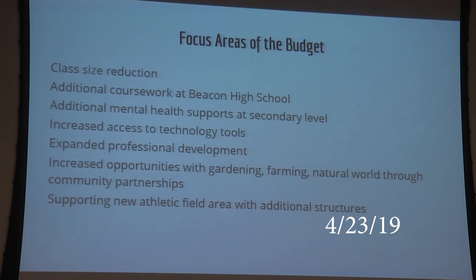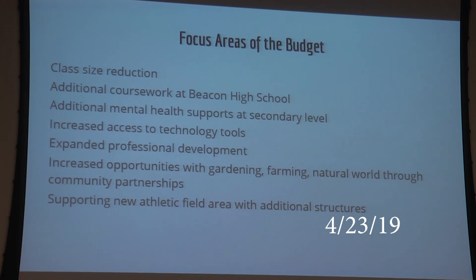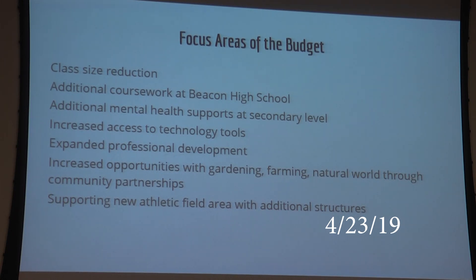$500,000 comes from transfers of $250,000 per year over the prior two school years, held in capital, which we'd like to use for the lights. We'd also like to use $200,000 of unappropriated fund balance from the general fund as a construction contingency, because after opening bids we were a little too close to the total amount. The voters will approve this proposition along with the budget and the bus proposition. We also put money in the general fund budget for bleachers and a scoreboard.